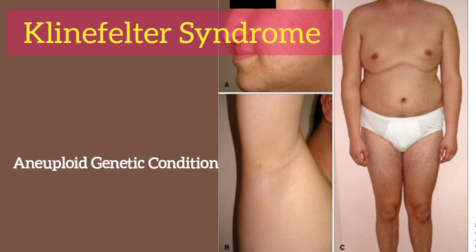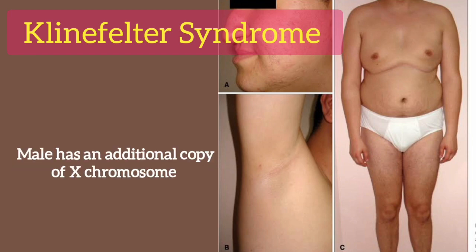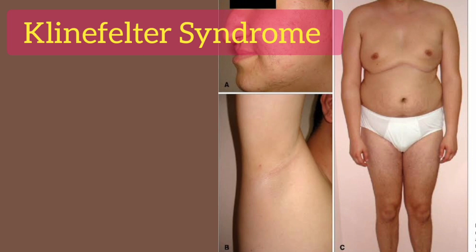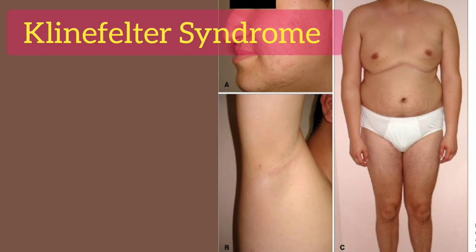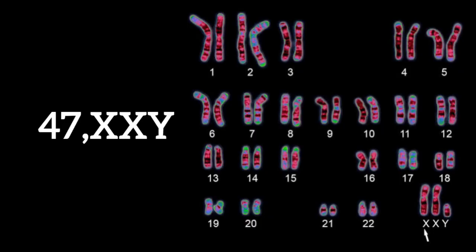It is an aneuploid genetic condition where a male has an additional copy of the X chromosome. So it is an example of trisomy. The individual has 44 autosomes and 3 sex chromosomes, of them 2 X chromosomes and 1 Y chromosome. So the karyotype is written as 47XXY.